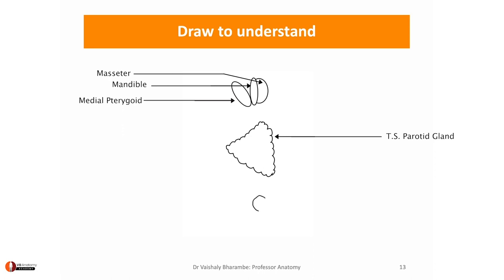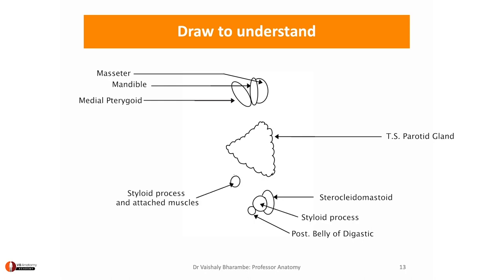Posteriorly, it is related to the mastoid process, which on the outside gives attachment to sternocleidomastoid and on the inside to the posterior belly of digastric. Here it is related to the styloid process, giving attachment to styloglossus, stylohyoid, and stylopharyngeus. Further medially, you come across the beautiful carotid sheath containing the internal carotid artery, the internal jugular vein, along with the 9th, 10th, 11th, and 12th cranial nerves.